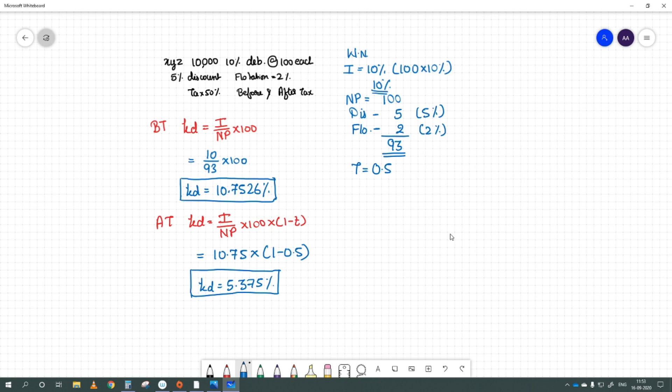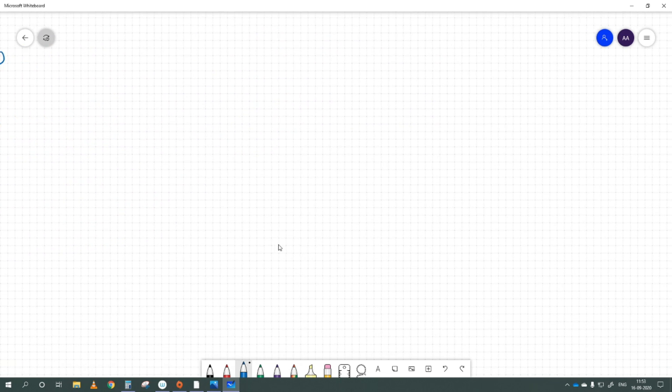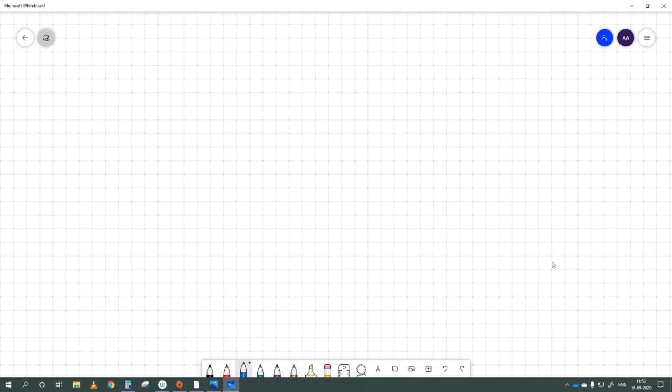Cost of debt capital after tax: KD equals I upon net proceeds multiplied by 100 multiplied by 1 minus t. We already calculated it above, so it is 10.75 multiplied by 1 minus 0.5. 1 minus 0.5 is 0.5.